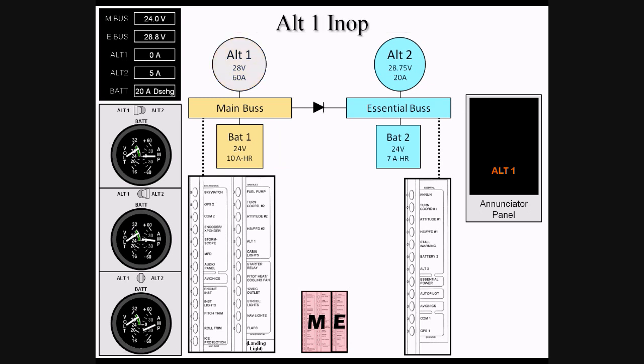If Alt-1 fails, all of the main bus items are now being powered by BAT-1, as the diode prevents Alt-2 from feeding the main bus. Main bus voltage will drop to 24 volts, as that is the voltage of BAT-1. Alt-1 output will drop to zero, and the battery will show a discharge of what the load on Alt-1 was previously. Alt-1's output dropping to zero will trigger the Alt-1 caution coming on steady on the enunciator panel.